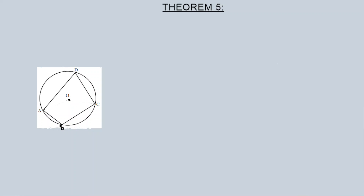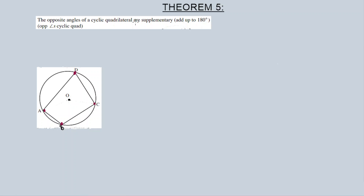Theorem Number Five and Theorem Number Six both involve cyclic quadrilaterals. A cyclic quadrilateral — cyclic quad ABCD — is a quadrilateral inside a circle, so A, B, C, D lie on the circumference. Theorem Number Five states: the opposite angles of a cyclic quadrilateral are supplementary, meaning they add up to 180 degrees.